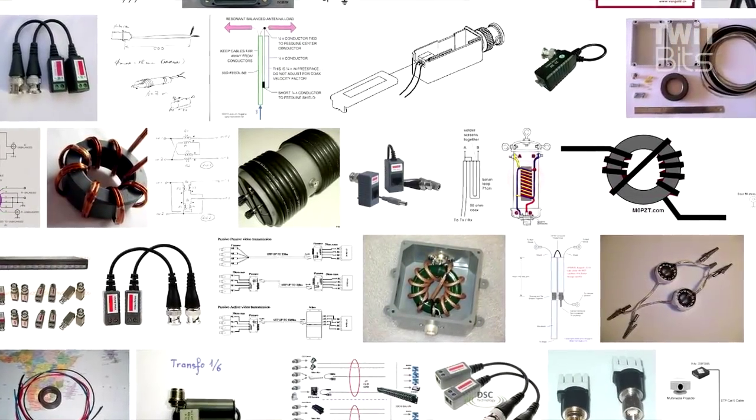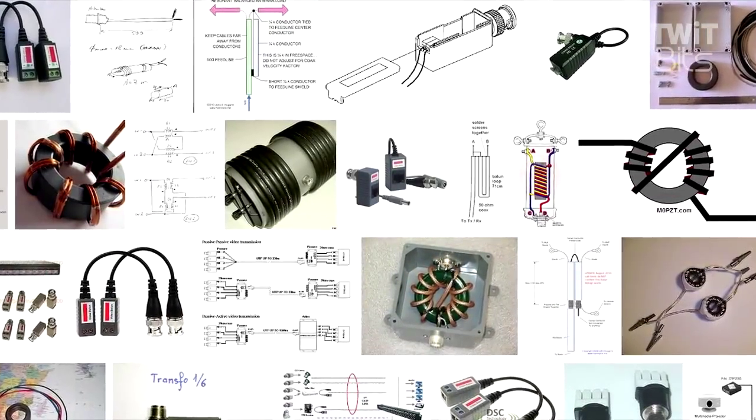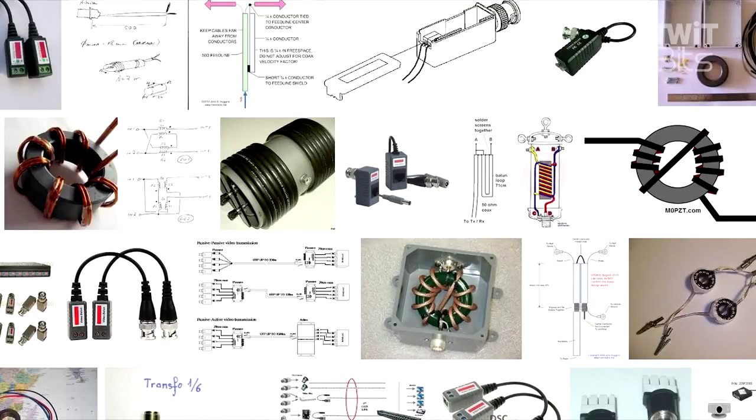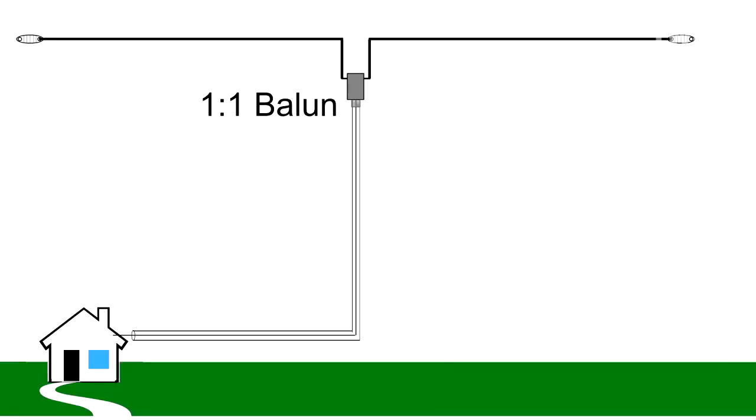A balun is a device that allows unbalanced transmission line to properly feed balanced antenna loads. A one-to-one balun will match unbalanced 50-ohm coax to a balanced 50-ohm dipole antenna.